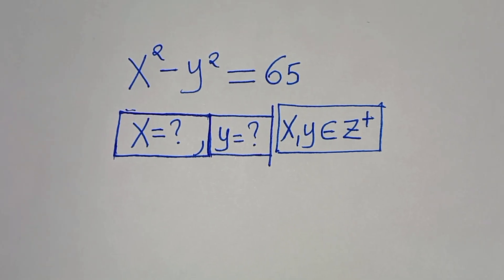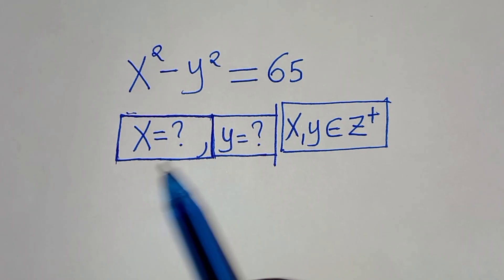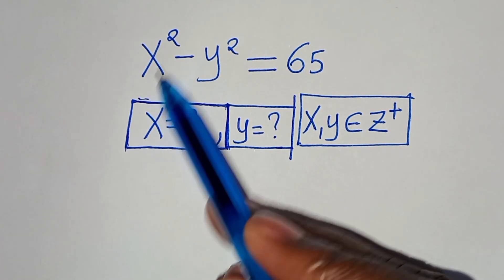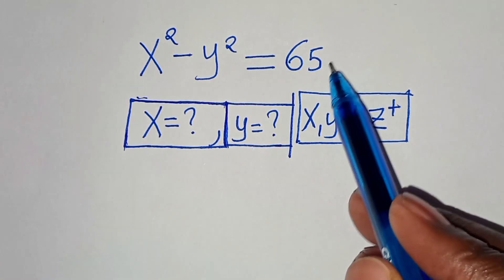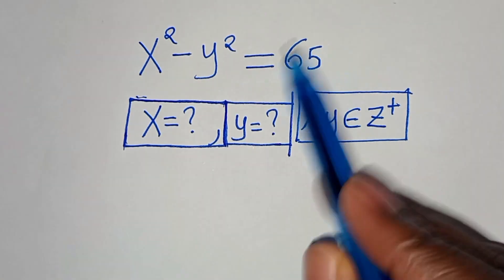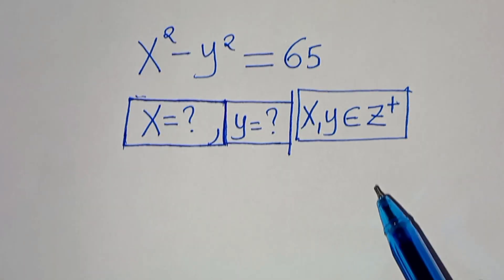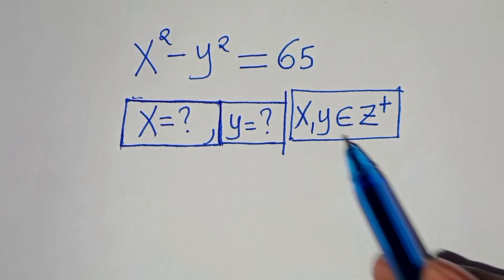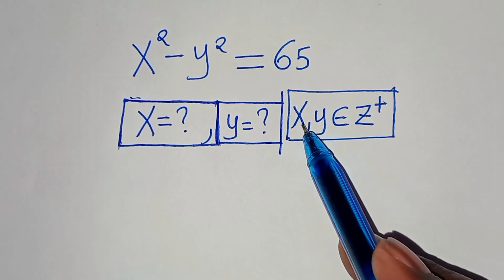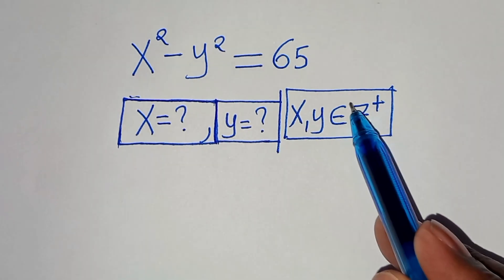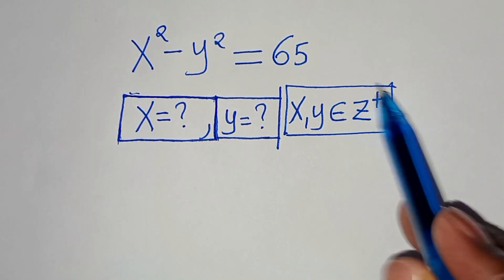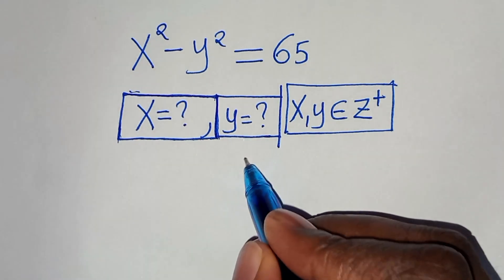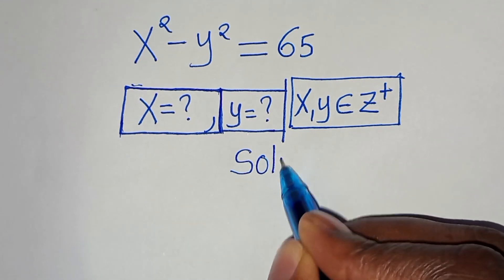Hello everyone, welcome to solve this nice algebra problem: x squared minus y squared is equal to 65. What is the value of x and what is the value of y, given that x and y are members of the positive integers? Let's provide a solution.